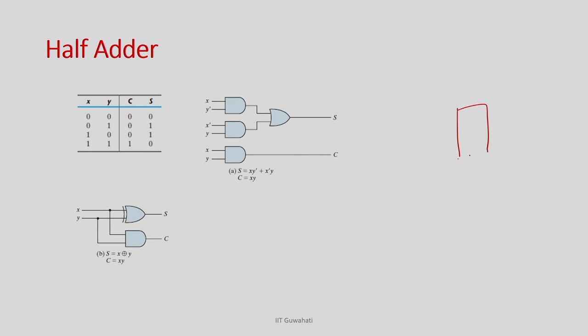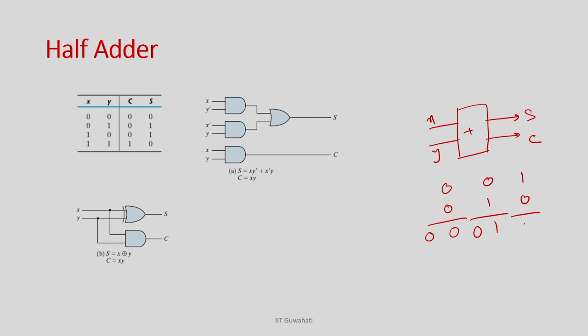Our objective is to develop an n-bit full adder, but we will start with just developing a single-bit adder first. Think about having two bits x and y, both one bit, and you want to add them. You will get a sum and a carry. If you add 0+0 you get sum 0 carry 0; 0+1 gives sum 1 carry 0; 1+0 gives sum 1 carry 0; and 1+1 gives sum 0 carry 1.